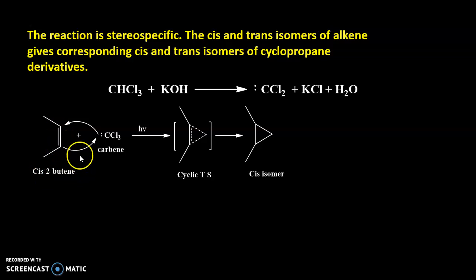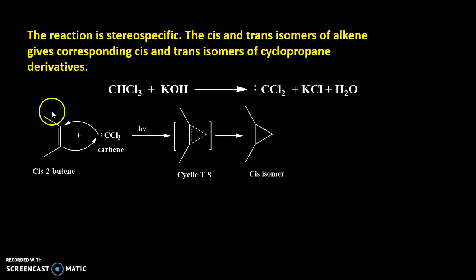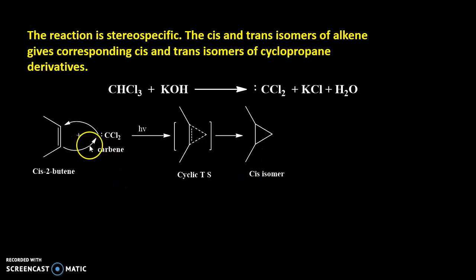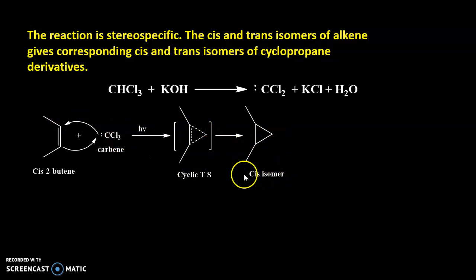Consider cis-2-butene, where CH₃ groups are on the same side. We have already noted that the reaction is stereospecific, meaning this cis geometry of the starting material should be retained in the product. The mechanism is the same: this bond shifts here, this bond shifts here, simultaneous bond breaking and bond formation takes place via a cyclic transition state, and the product is the cis isomer. The geometry is retained in the product.